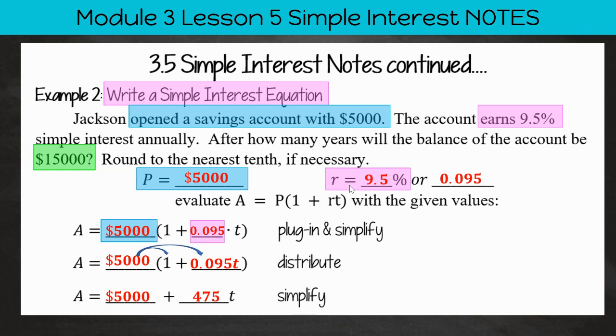And that is our equation, our simple interest equation. Now what we can do is if we're given T, we can find A. Or if we're given A, like in this case, we can figure out how many years it will take until we reach that amount.